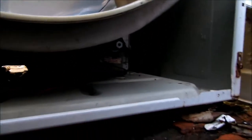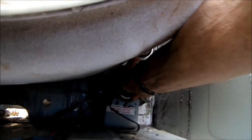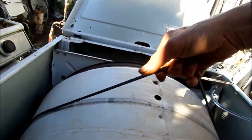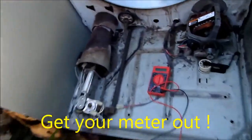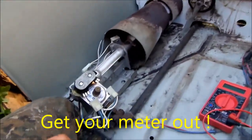And make sure the unit is unplugged for now. Then you can stick your hand back in here and pull this belt off. And once you've got the belt off, then you can pull the barrel out. Okay, so get your meter out and take a look at it.